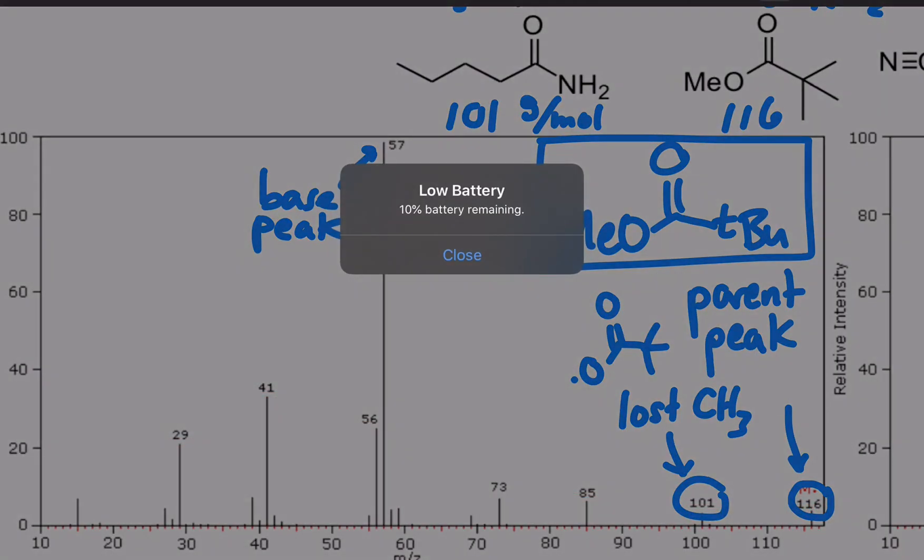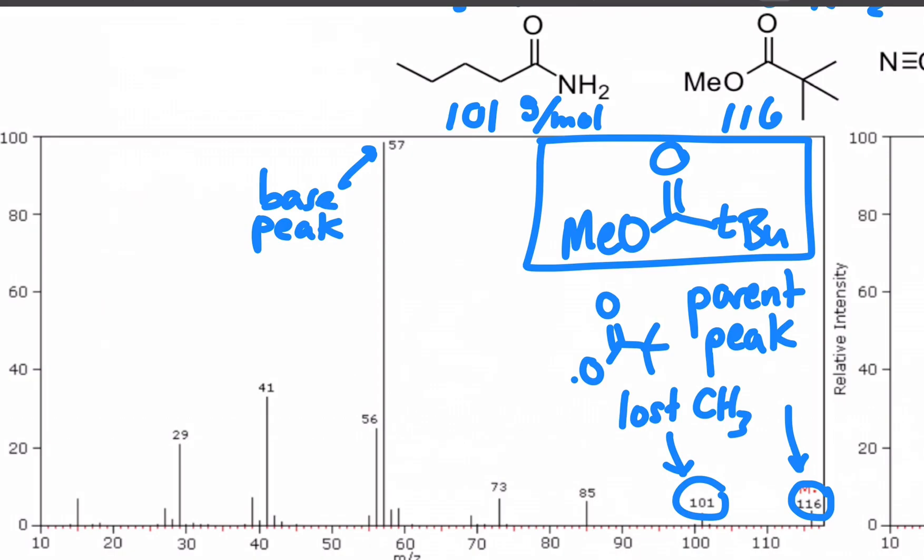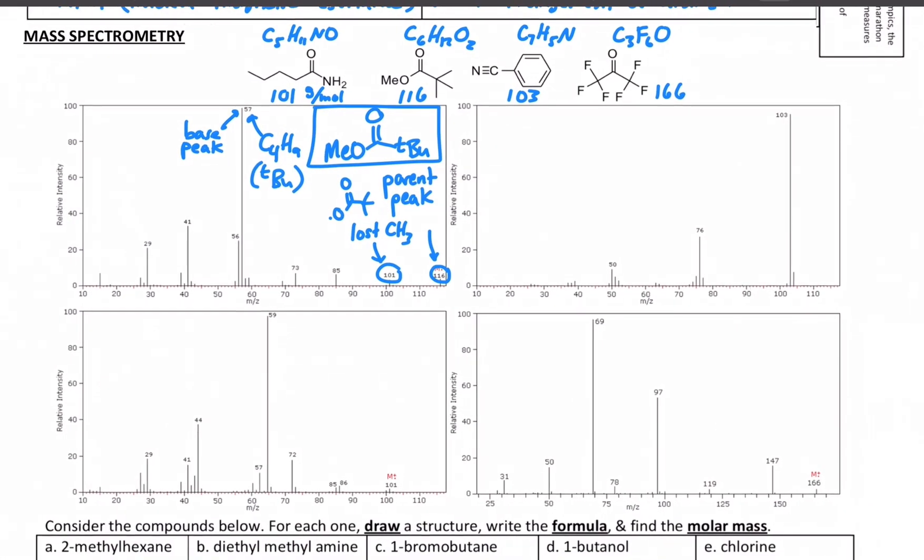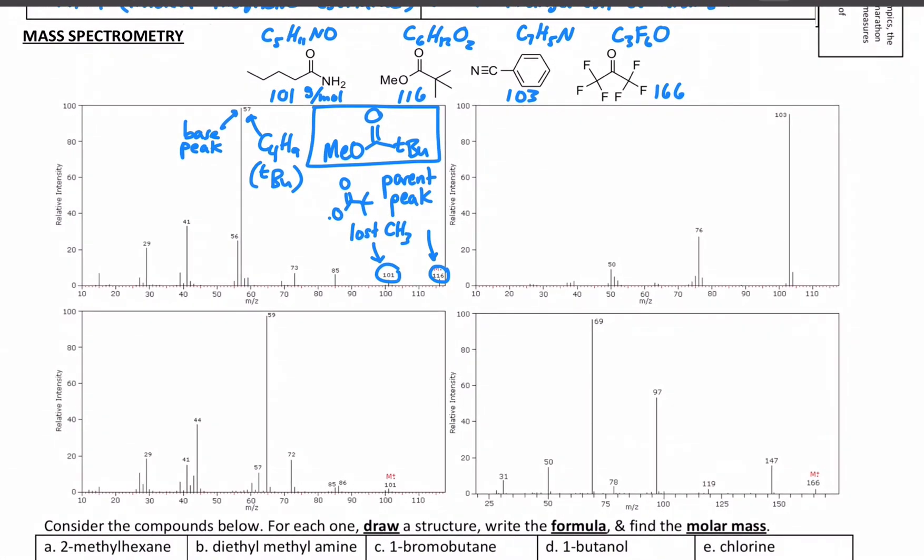All we're concerned with is the numerical values that show up in the spectrum. In this case of 57, we could even try to make sense of it as being a t-butyl group. 57 is exactly C4H9. So that could be a t-butyl broken off. So hit pause and go ahead and match the other three with the spectra by looking at the molar mass and maybe identifying a fragment here and there.